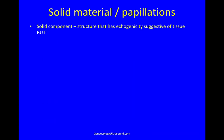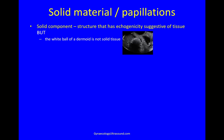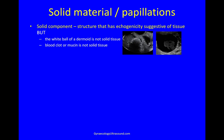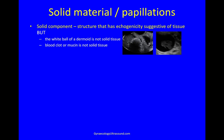It's important to understand solid material and papillations. A solid component is a structure that has echogenicity suggestive of tissue — that's very important. The white ball of a dermoid, the Rokitansky nodule, is not tissue so it's not solid. Also blood clot or mucin is not solid tissue. You just have to remember: the white ball of a dermoid and blood clot or mucin are not solid. Solid is a structure that has echogenicity suggestive of tissue.